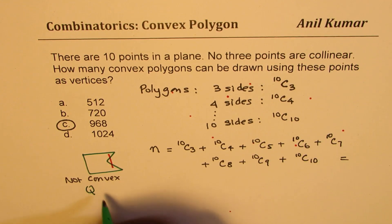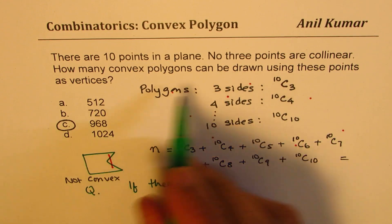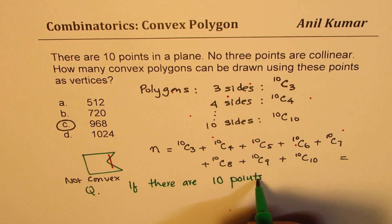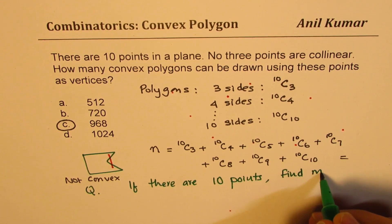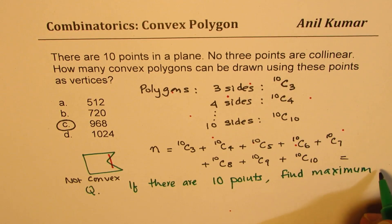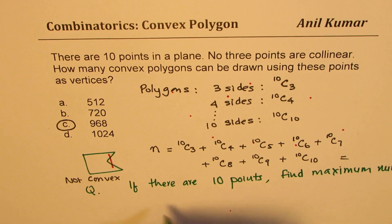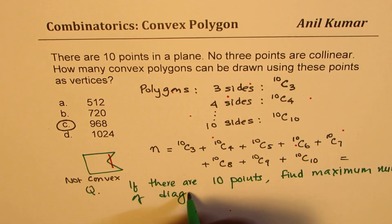So next question for you is that if in the same case, if there are 10 points, whatever, I've given 10 points, right? So find maximum number of diagonals, right? So we are not seeing our different shapes. We are making one polygon with connecting all those 10 points and we are assuming this to be a convex polygon.